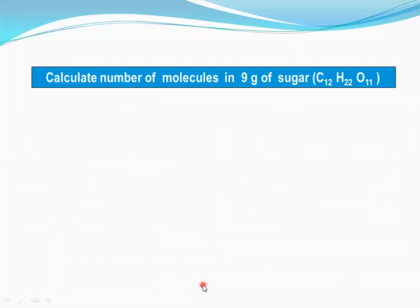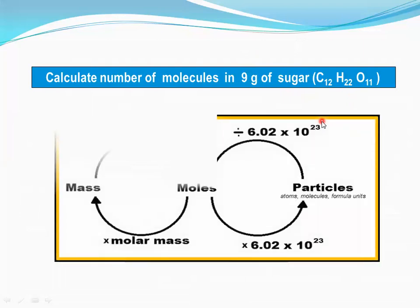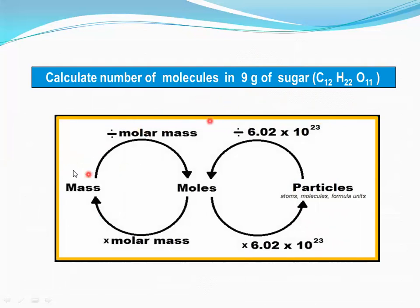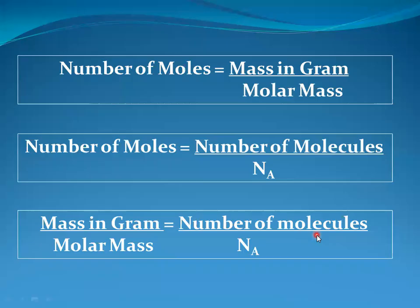Next example: calculate the number of molecules in nine grams of sugar — lactose, formula C₁₂H₂₂O₁₁. The given mass is converted into moles by dividing by the molar mass of lactose, and then those moles are converted into number of particles by multiplying by the Avogadro constant. Using the merged formula: mass in grams divided by molar mass equals number of molecules divided by Avogadro constant.